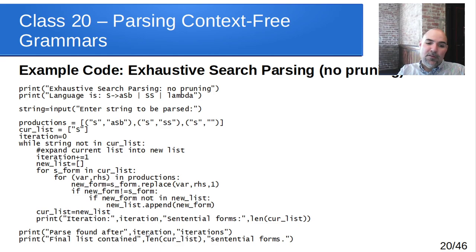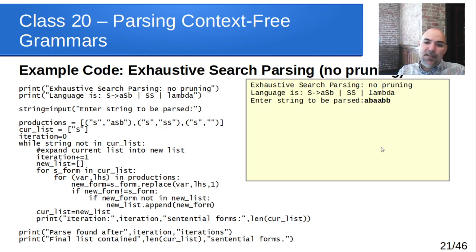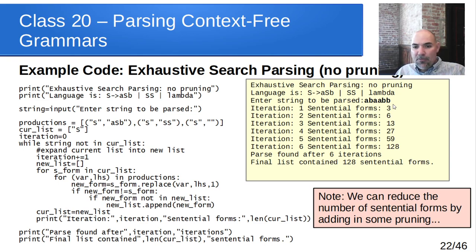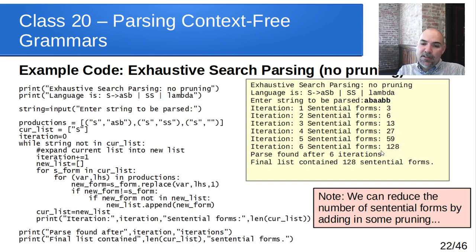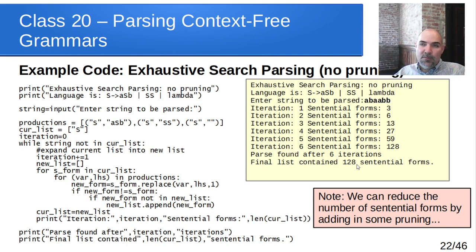When I run this and feed in the string 'abaabb', the first iteration produces 3 sentential forms, the second gives 6, then 13, then 27, then 59, then 128 — and then it finds the string among those 128. Notice that the list ballooned to 128 items after just six iterations, and then we found it.